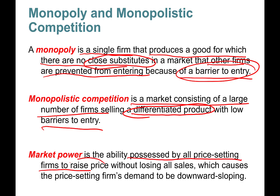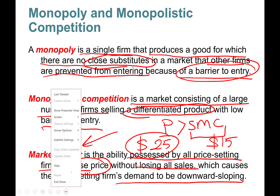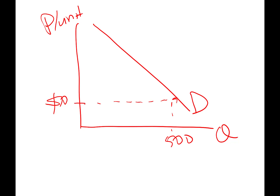Market power is the ability possessed by price-setting firms to raise a price without losing all sales, which causes the demand curve to be downward sloping. This is powerful — if you can set your price greater than your marginal cost, that's market power. For example, if making sunglasses costs $15 per unit but you can charge $25, that is market power. You also get a downward sloping demand curve.